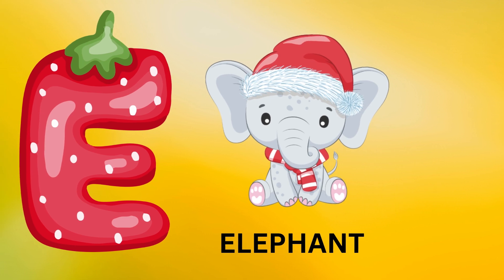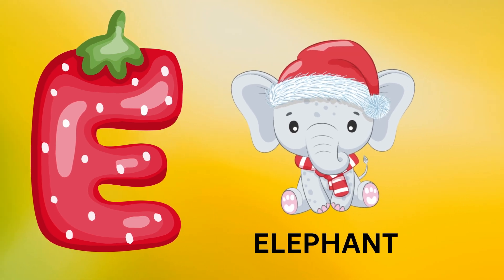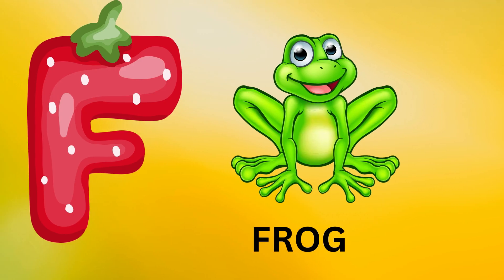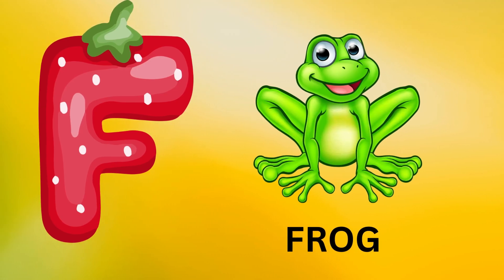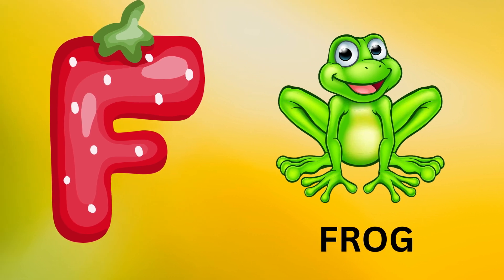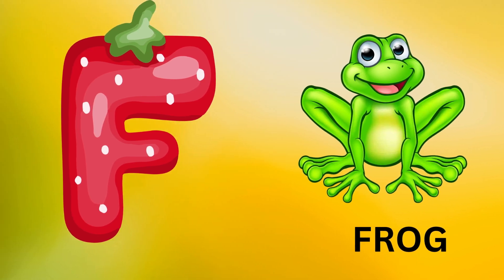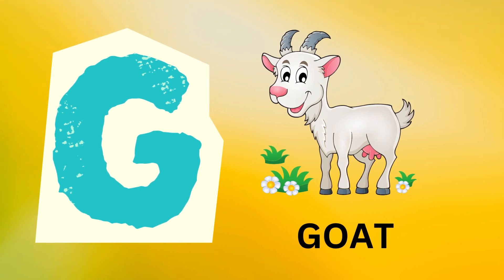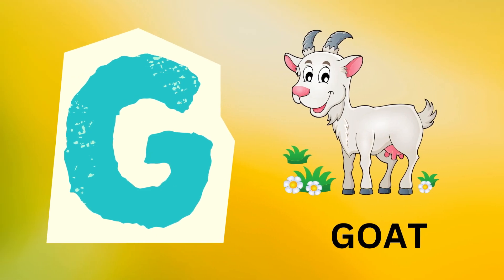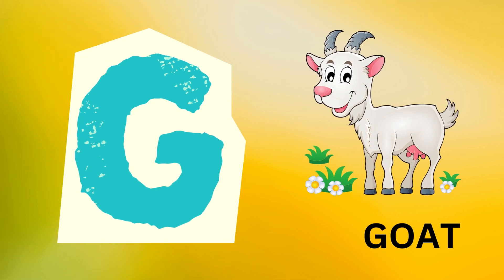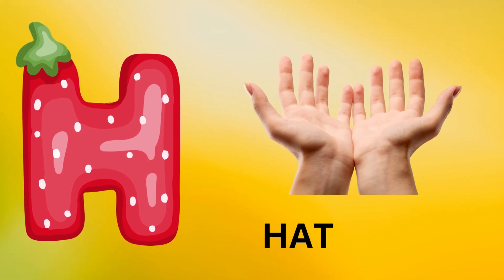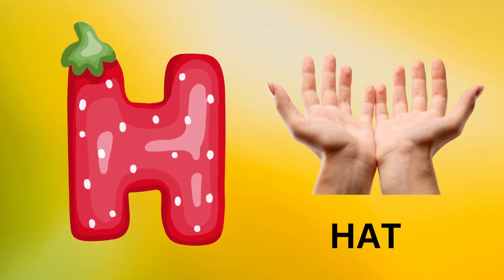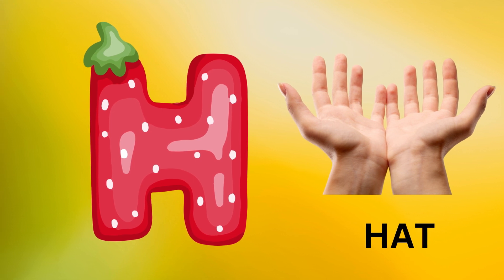E is for elephant, e-e-elephant. F is for frog, f-f-frog. G is for goat, g-g-goat. H is for hand, h-h-hand.